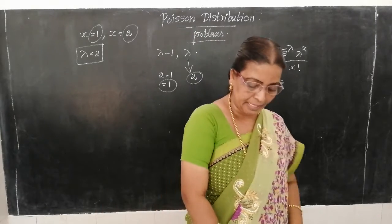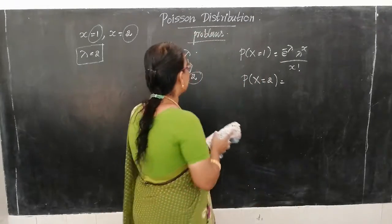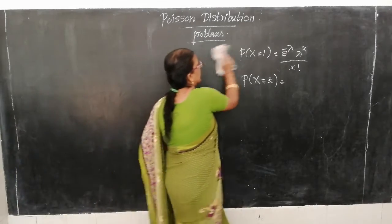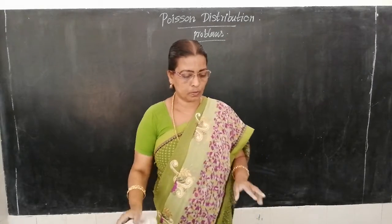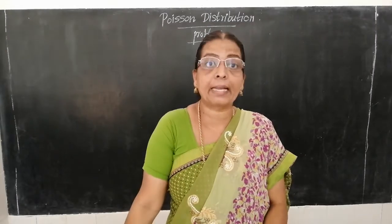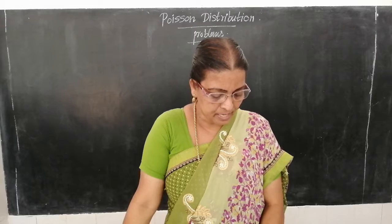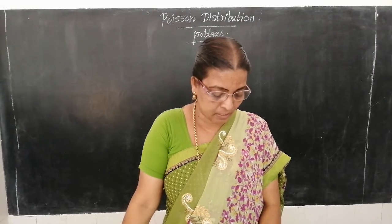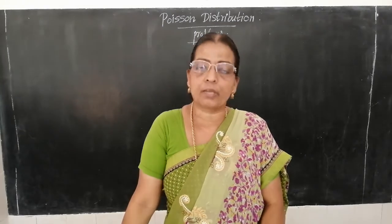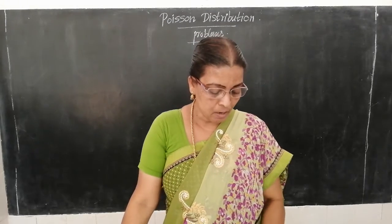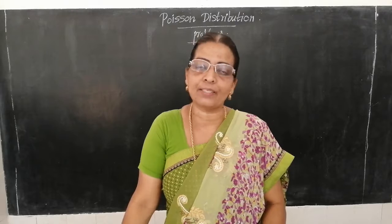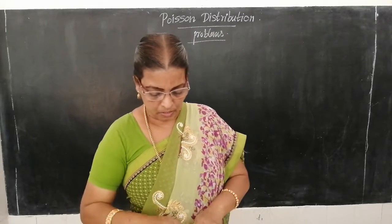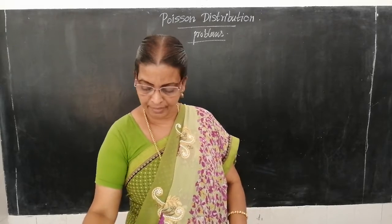Example 8.43. If X and Y are independent Poisson variates such that P(X = 1) = P(X = 2) and P(Y = 2) = P(Y = 3), find the variance of X − 2Y. This is an important problem.